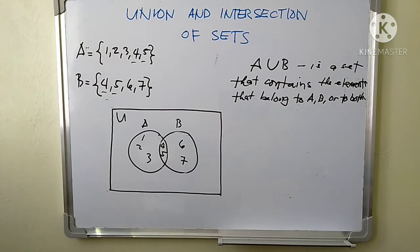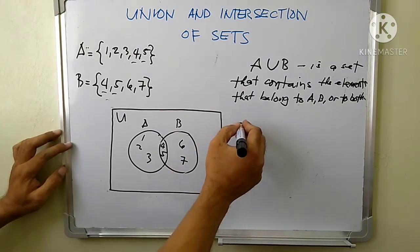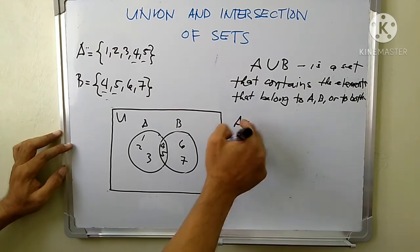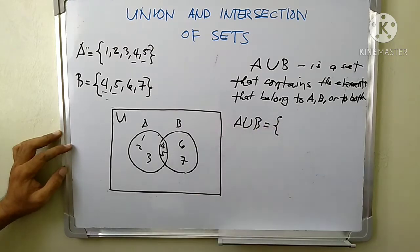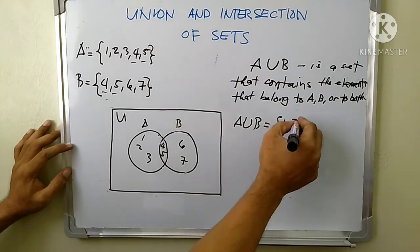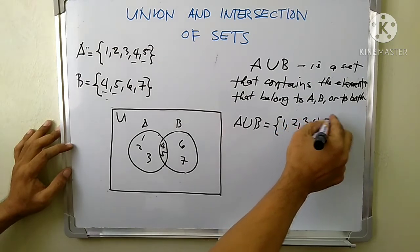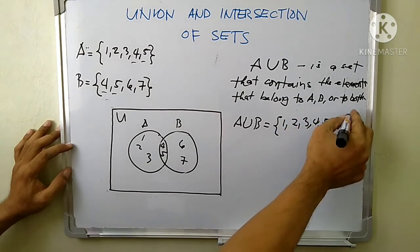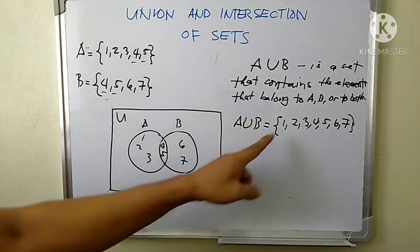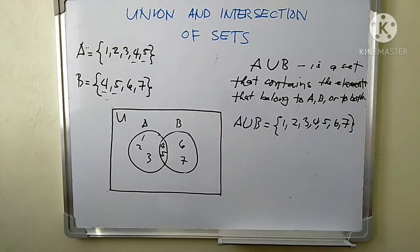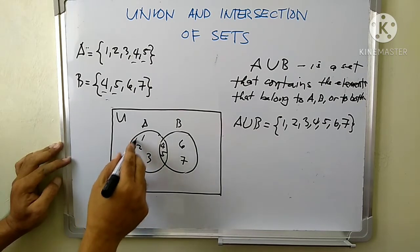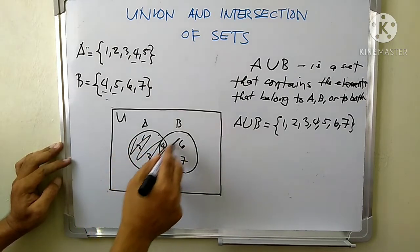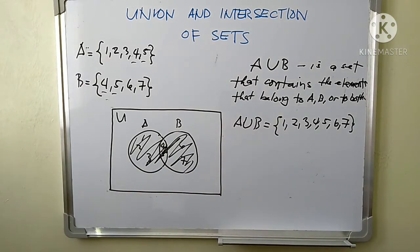And let's start writing it. A union B is a set whose elements are 1, 2, 3, 4, 5, 6, and 7. That's their union. It means that we are getting all the elements of both sets A and B.